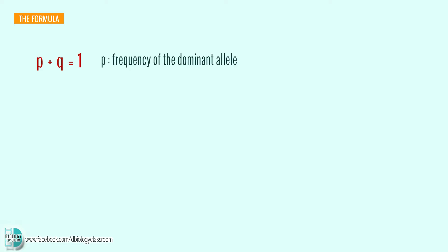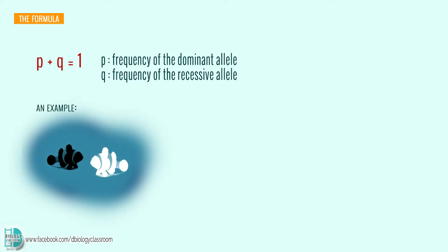The formula is p plus q equals 1, where p is the frequency of the dominant allele and q stands for the recessive allele. Let's use an example to understand this. In a fish population, there are two alleles for color: big B for black and small b for white.